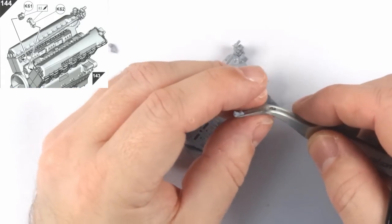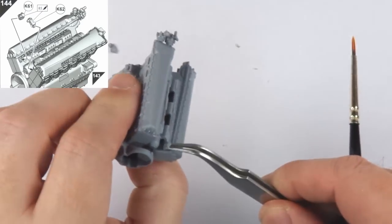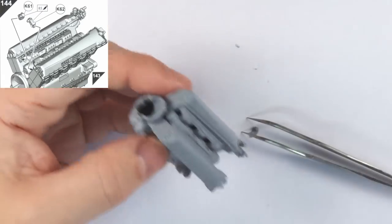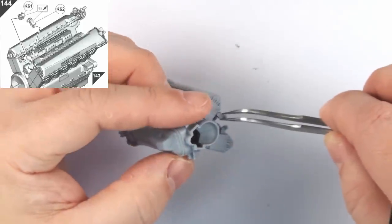Step 144 sees us fit the connectors to the cooling system header tank and here I'd advise that you put these on in steps 138 and 139 since getting these pipes in place when the block is already assembled is unnecessarily fiddly and I don't see any reason to wait until it's complete to do it.